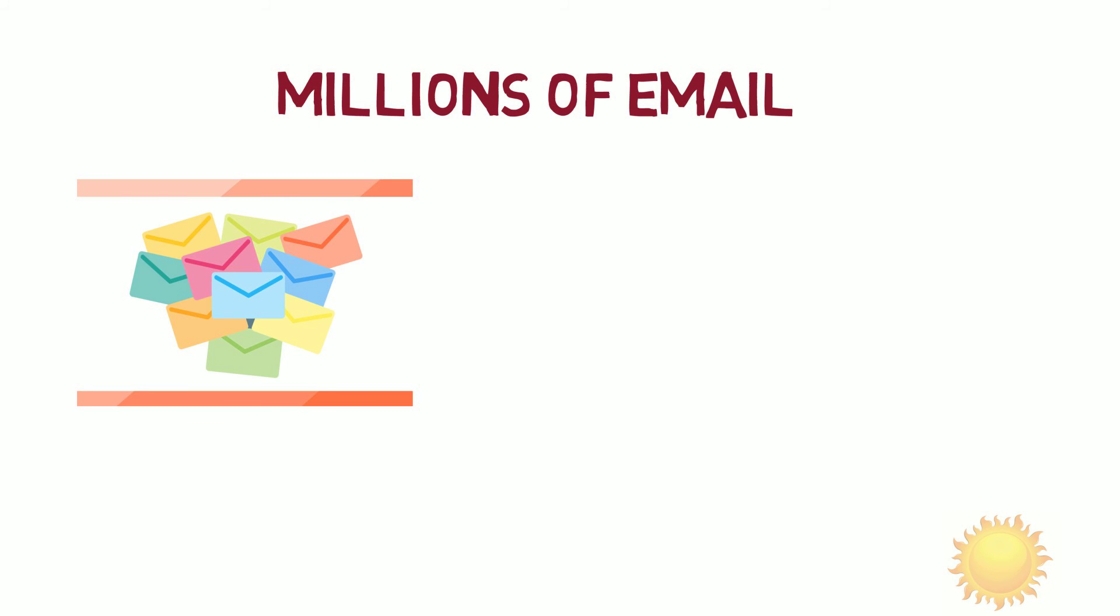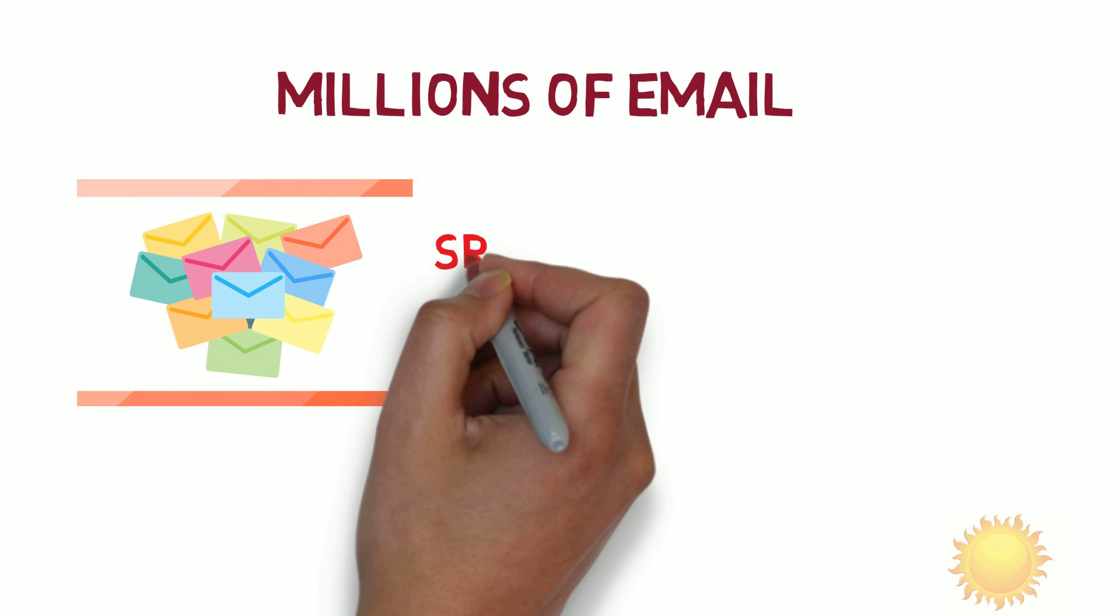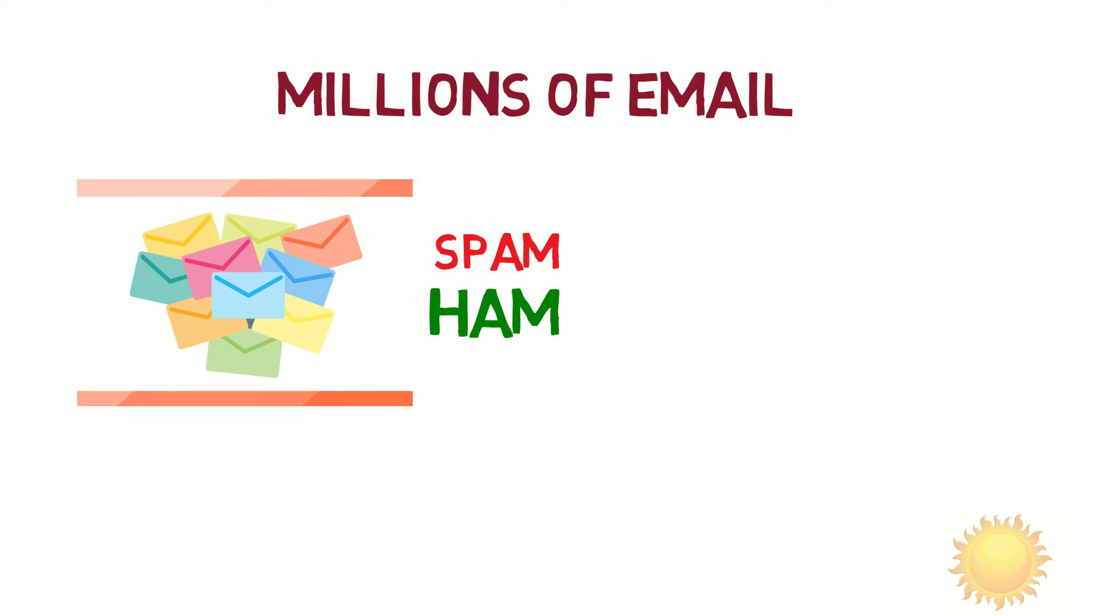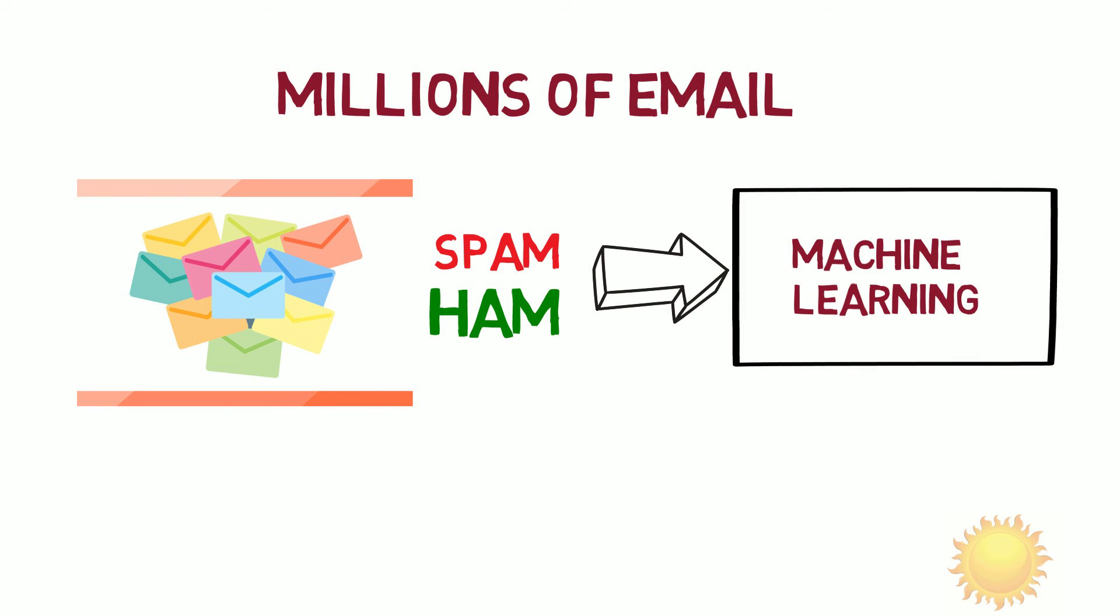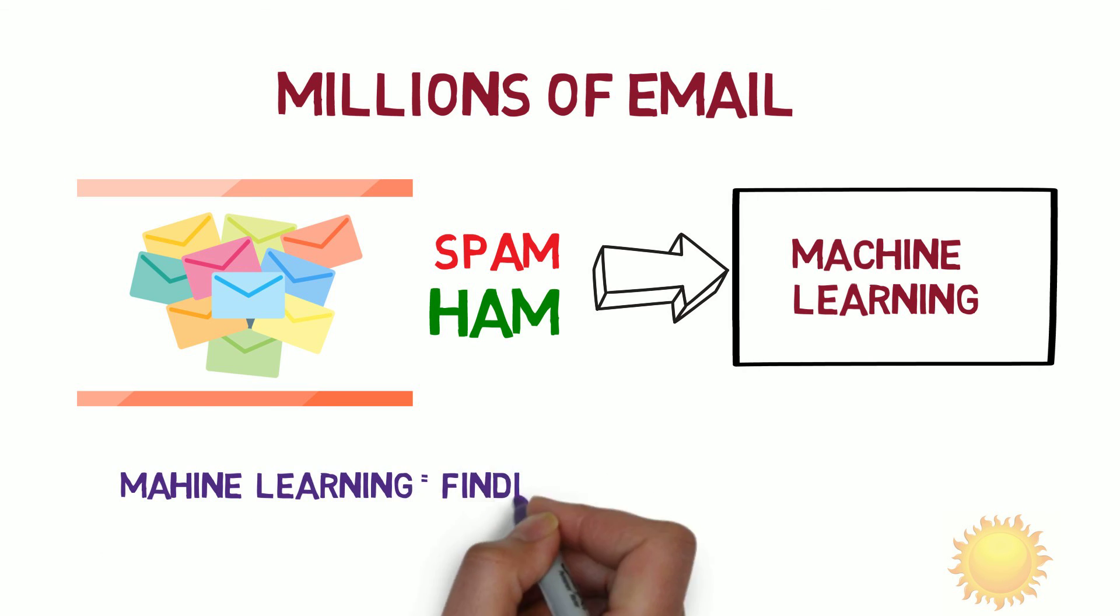Let's say we have millions of emails of different users and we want to find whether a particular email is spam or ham. Does any relationship exist between email content and whether it's spam or ham? We can feed all those emails to a machine learning algorithm and it will give us the relationship between email content and whether a particular email is spam or ham. So machine learning is all about finding relationships between data.